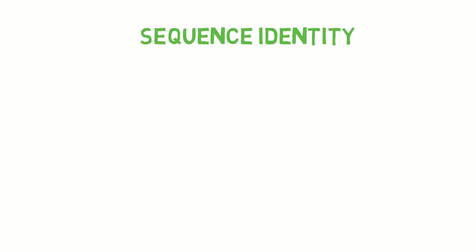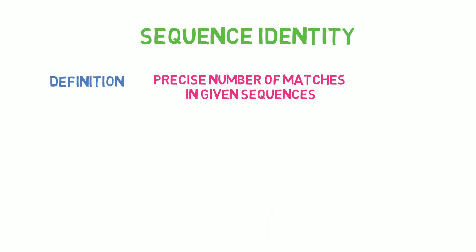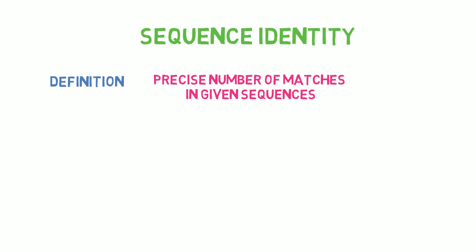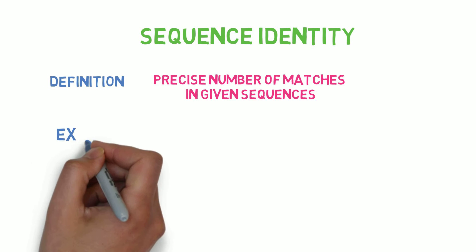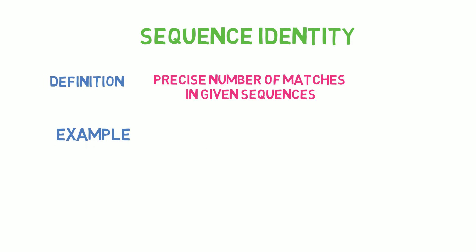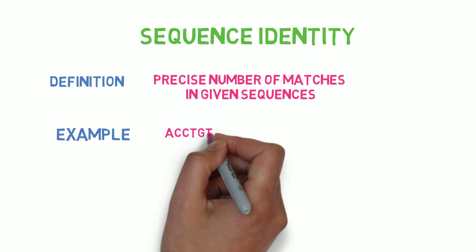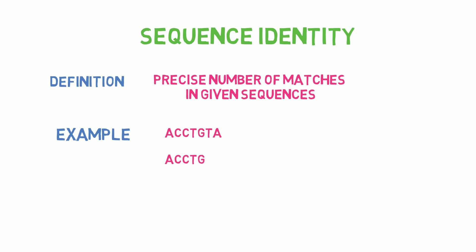The precise number of nucleotides or amino acids is known as the sequence identity that perfectly match another biological sequence. Take a look at the illustration. The two sequences are as follows. How do we now calculate sequence identity?